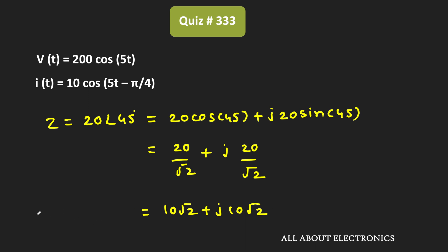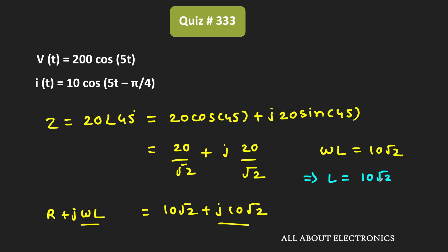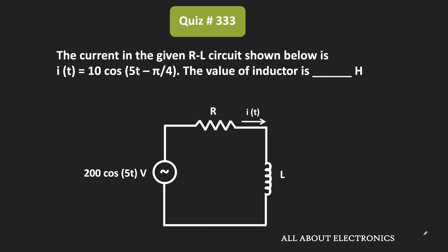And as we have seen earlier, Z is equal to R plus jωL. So let's compare the imaginary terms. That means ωL is equal to 10√2. And as we have seen, ω is equal to 5. That means L is equal to 10√2 divided by 5, which gives us 2√2. So from this, we can say that for the given question, the value of the inductor is equal to 2.82 Henry.